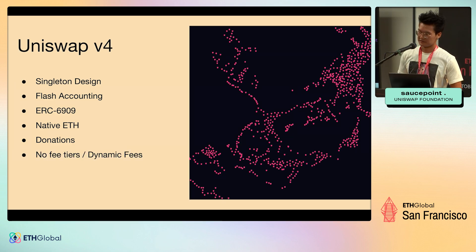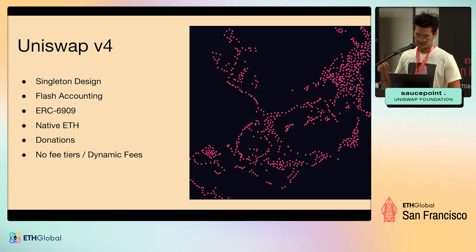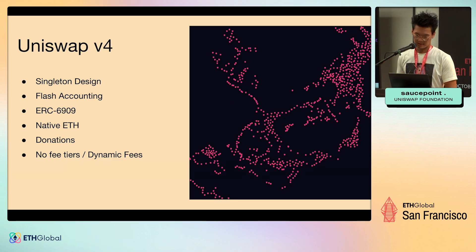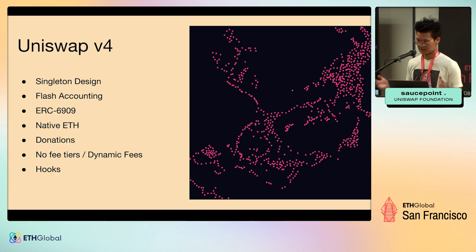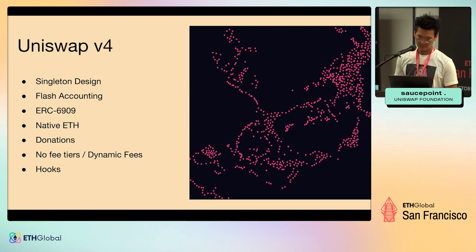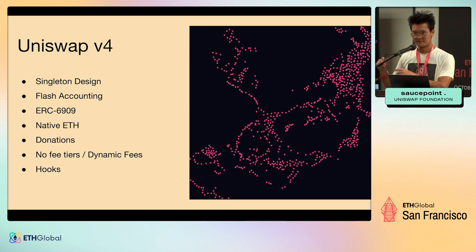In v4 we also have no fixed fee tiers. In v2 it's a fixed 0.3%. In Uniswap v3 there are four or five different fixed values. In v4 it's fully continuous. We also have dynamic fees, which are very programmable — you can adjust fees up or down. The core protocol doesn't make any hard-coded decision on how fees should change, so that's something for developers to explore. And then lastly, hooks, which is the bulk of where v4's flexibility comes into play. All these together summarize v4 as being an extension of v3 with way more flexibility and gas efficiencies.